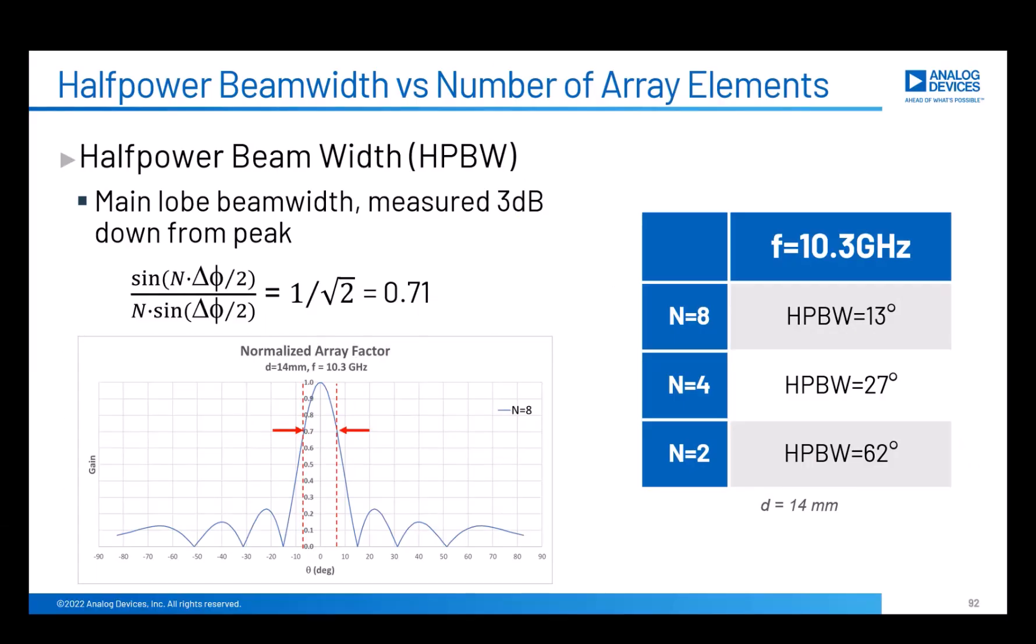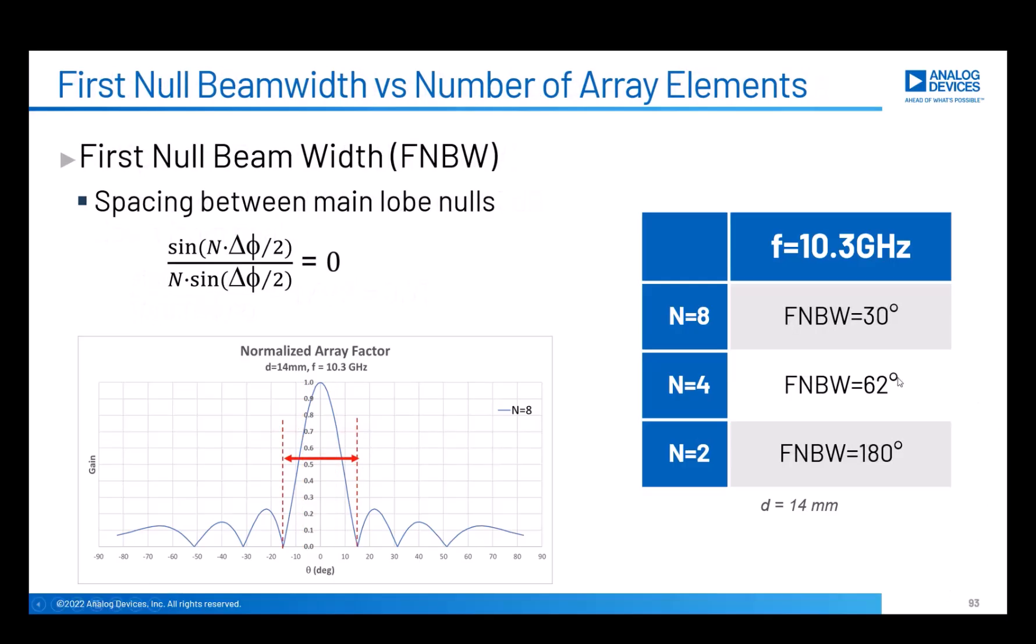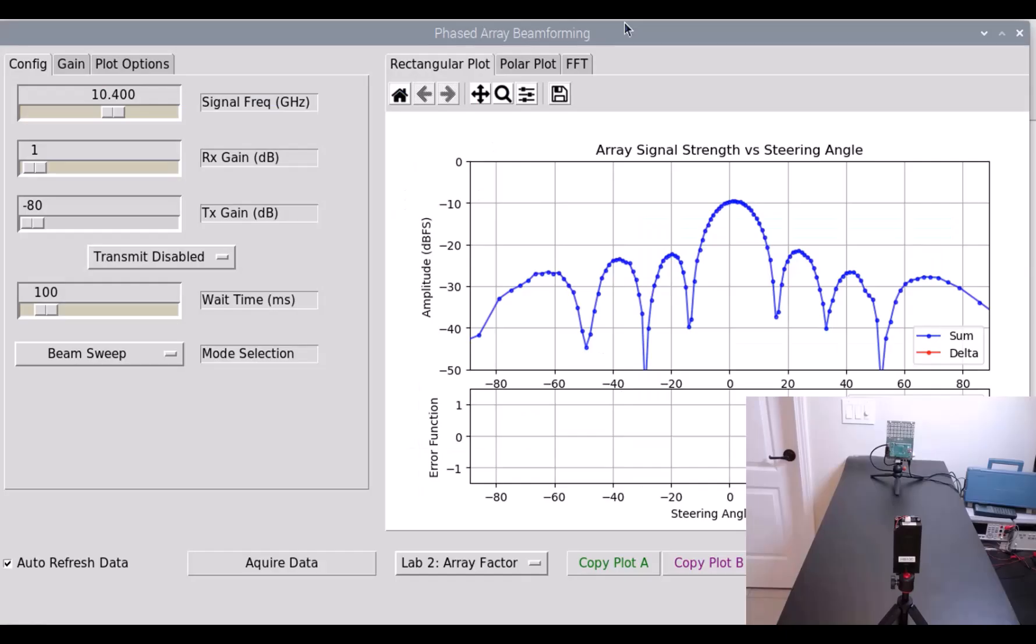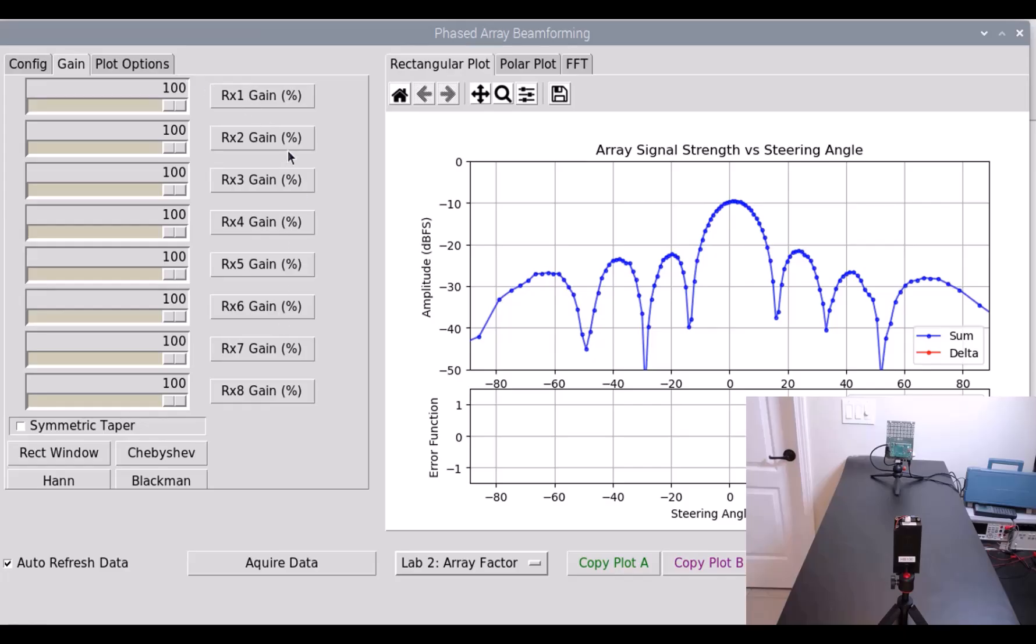And here's just a reminder of what we had calculated for those half-power beam widths for the different numbers of elements. Similarly, here's our numbers, 30 degrees, first null beam width for 8-element array, and then much wider for the other two. So now let's use our phaser board to measure what a 4-element or a 2-element array would look like. Now, we can't rip antenna elements out of the phaser board. That would not be good. But what we can do is we can decrease the number of elements that are active here.